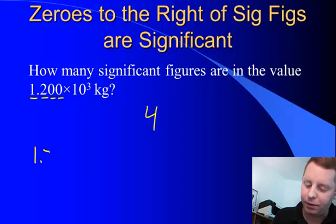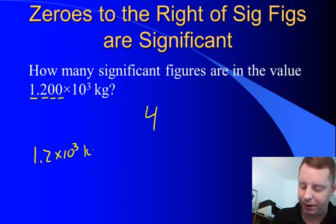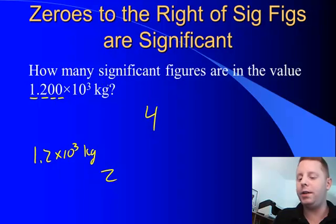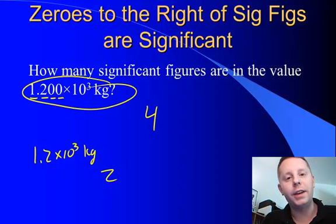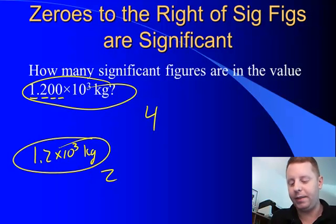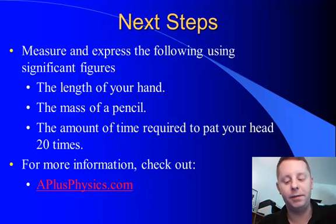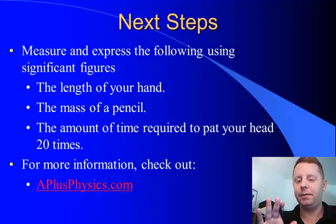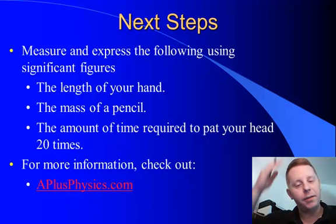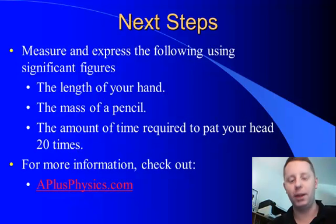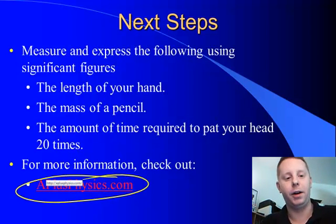If instead we had written 1.2 times 10 to the third kilograms, for that value we would have had two significant figures. So we know this value to a couple more decimal places, to a little bit more accuracy than we know the lower value. So for next steps, I would like you to try and practice measuring and expressing the following using significant figures: the length of your hand, the mass of a pencil, and the amount of time required to pat your head 20 times. See how accurately you can measure those and then express your answers in significant figures. For more information, you can always check out aplusphysics.com. Thank you.